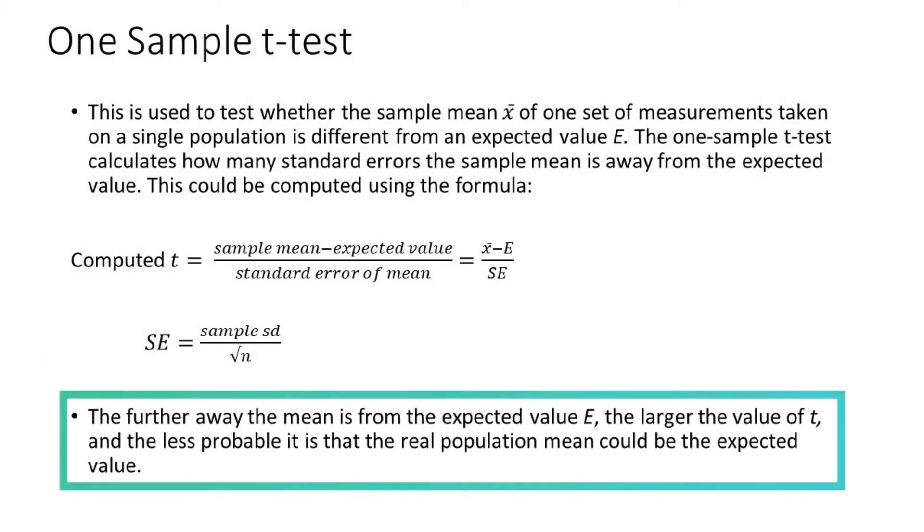In one sample t-test, the farther away the mean is from the expected value, the larger the value of t and the less probable it is that the real population mean could be the expected value.